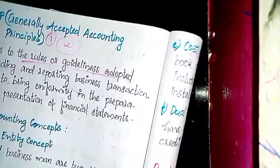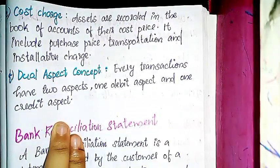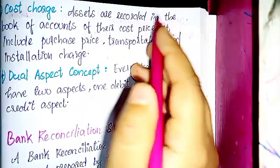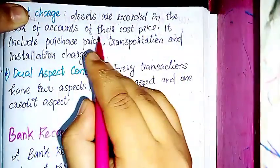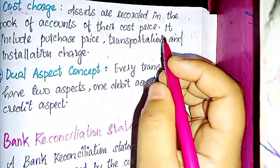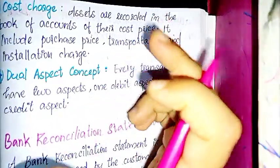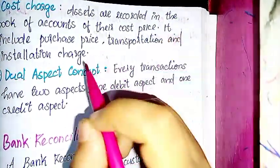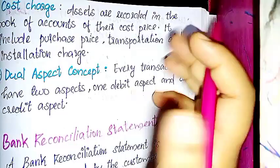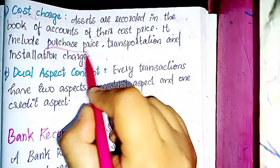The Cost Concept states that assets are recorded in the books of accounts at their cost price. The Dual Aspect Concept is also an important accounting principle — every transaction has two aspects.